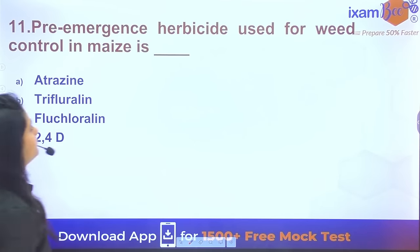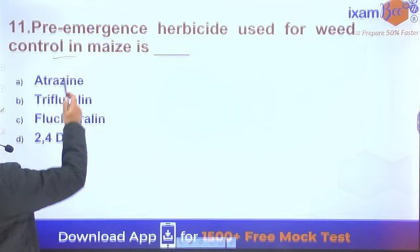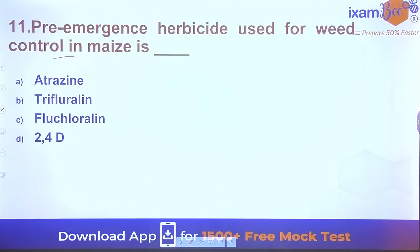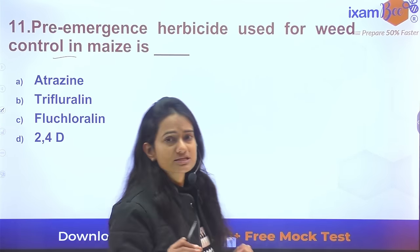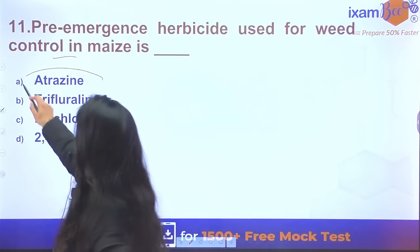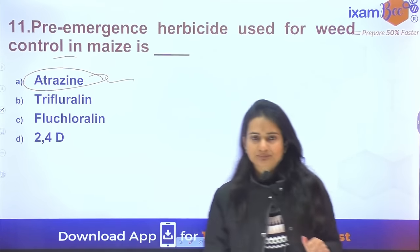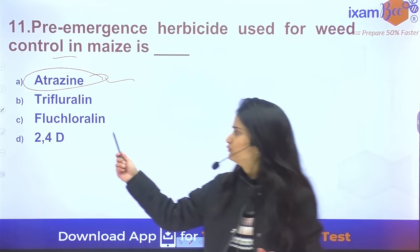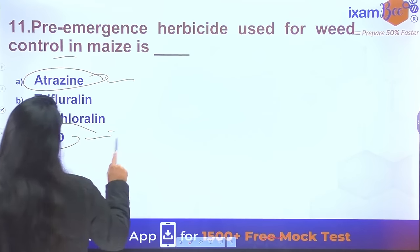Question 11: What is the pre-emergence herbicide used for weed control in maize? The herbicide majorly used in maize at present is Atrazine.